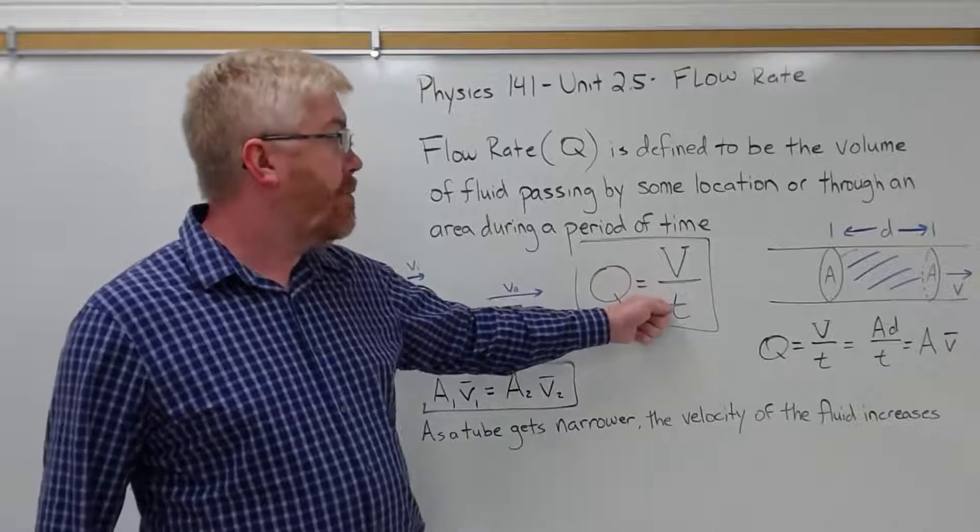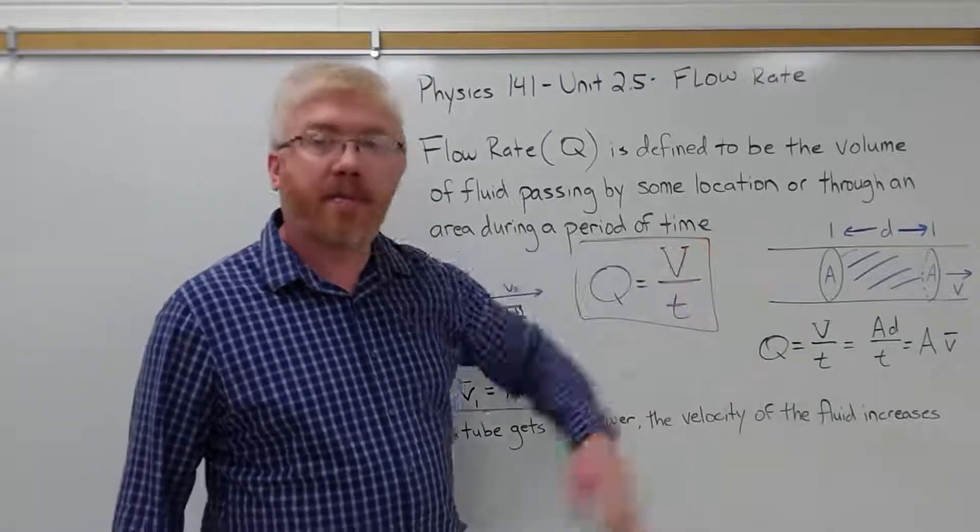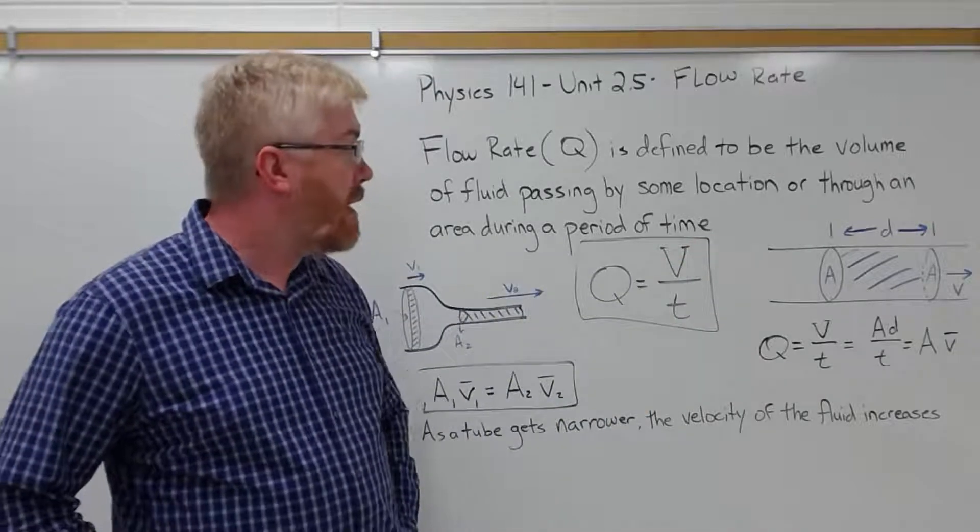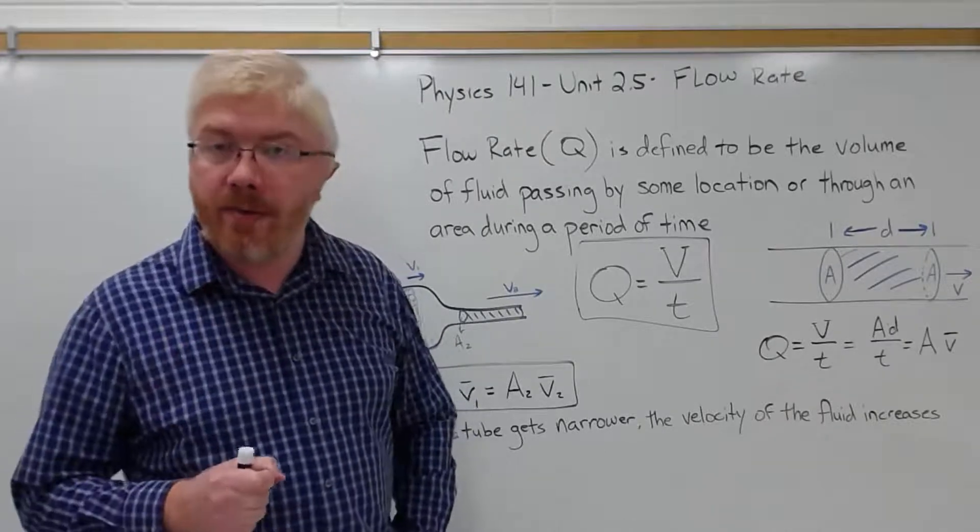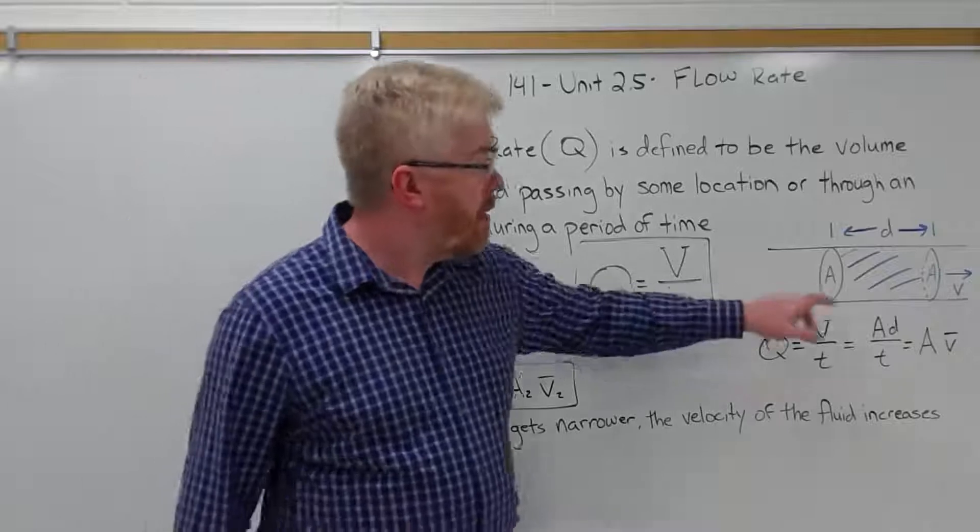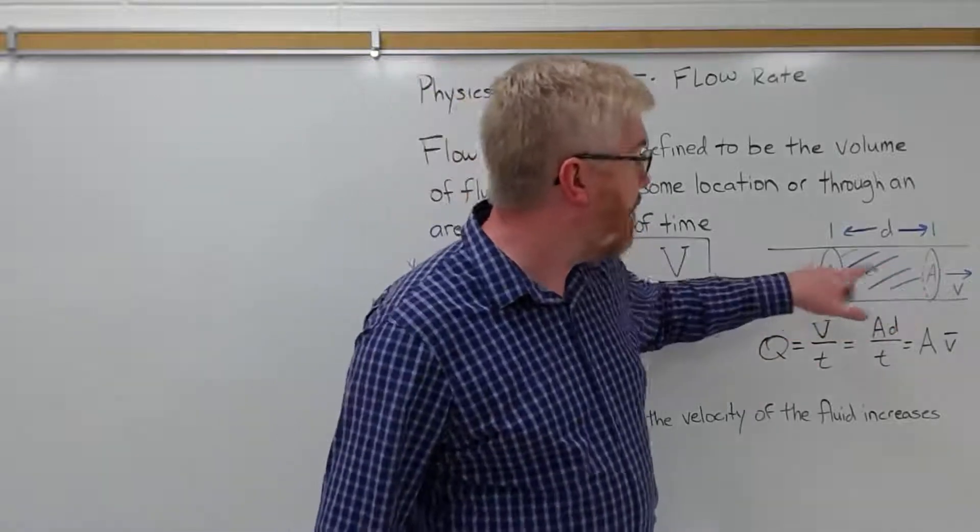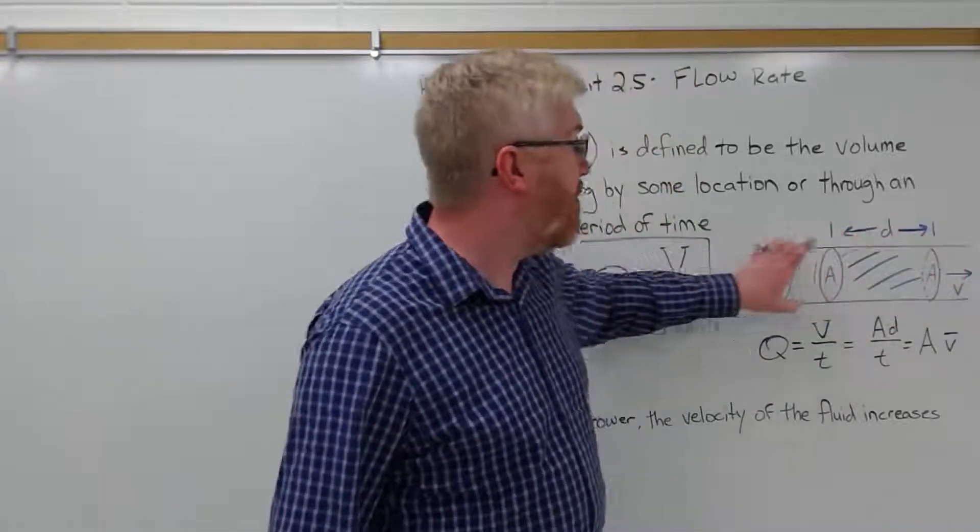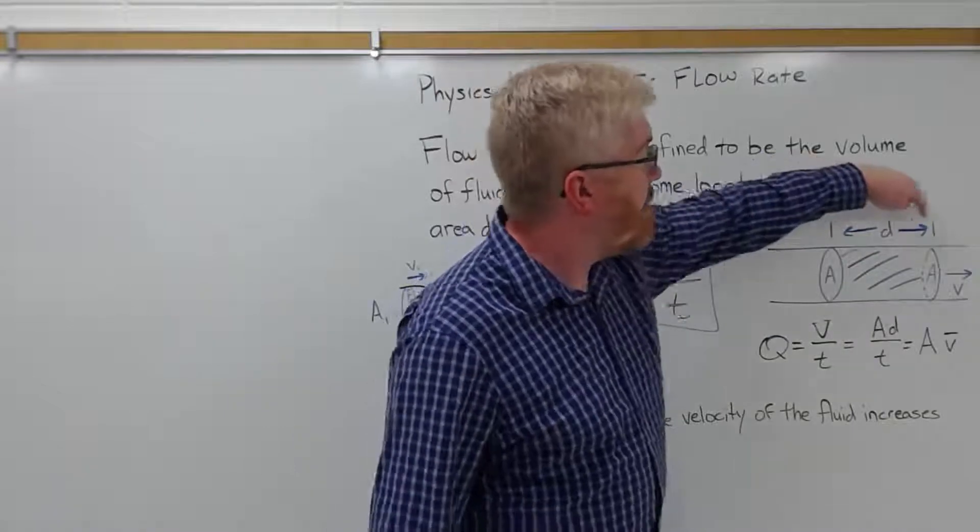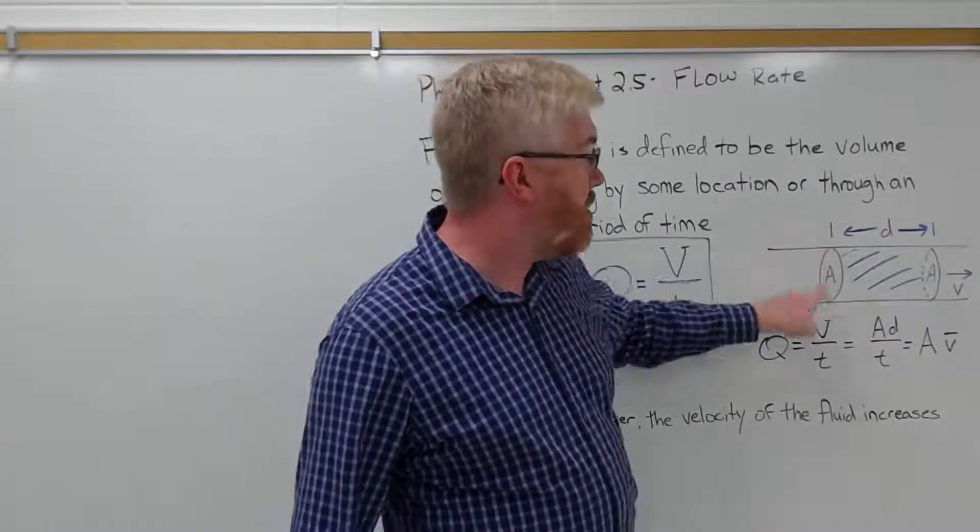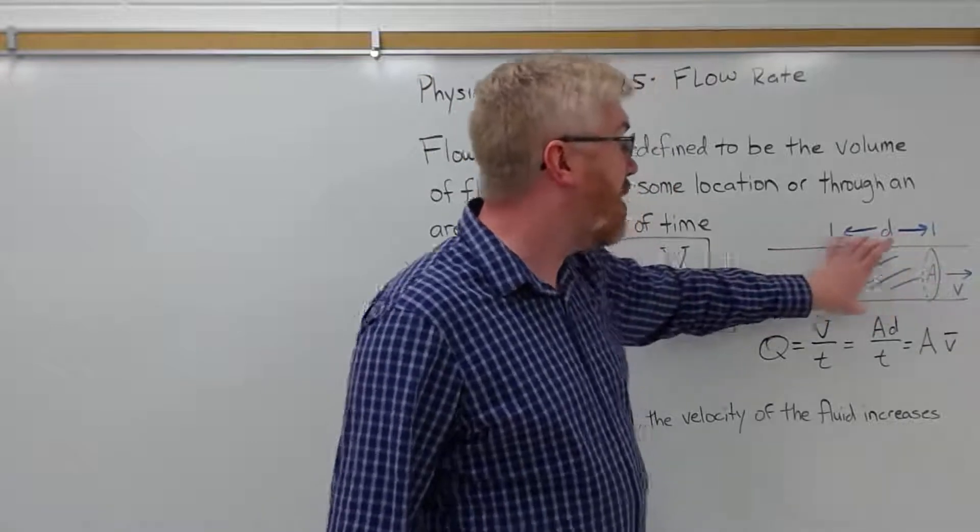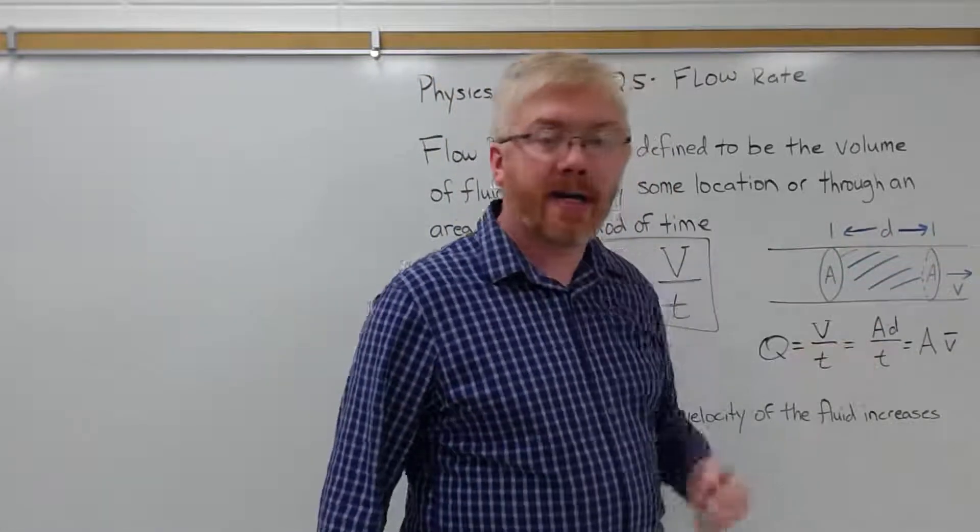The volume over time, so looking at this simple example on the right here of fluid traveling through a circular tube. We're going to look at the fluid between these two points, having area A. So this cylinder fluid, this volume of fluid, is moving to the right at velocity v.